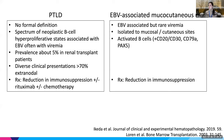PTLD is associated with EBV and there's often viremia. The prevalence in renal transplant patients is about 5%, more common in cardiac and lung transplants because they're more highly immunosuppressed, and more common in children. It's a diverse presentation with greater than 70% extranodal. Treatment for PTLD is reduction in immunosuppression, but it often requires anti-B-cell therapy like rituximab and/or chemotherapy.